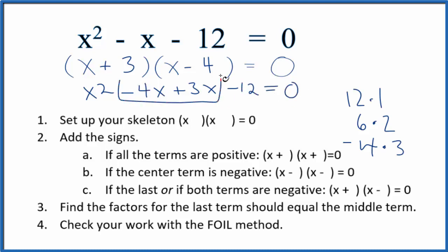we add these terms up right here, -4x and 3x, that's -x. So x² - x - 12 = 0. We did this correctly.